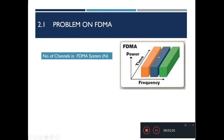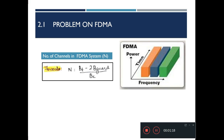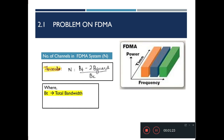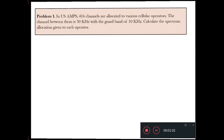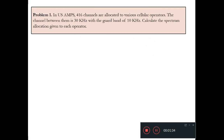FDMA is a multiple access technique wherein the available bandwidth is divided into a number of narrow-banded channels and allotted to each user. The number of channels available in an FDMA system is given by: N = (BT − 2B_guard) / BC, where BT is the total bandwidth, B_guard is the guard bandwidth, and BC is the channel bandwidth.